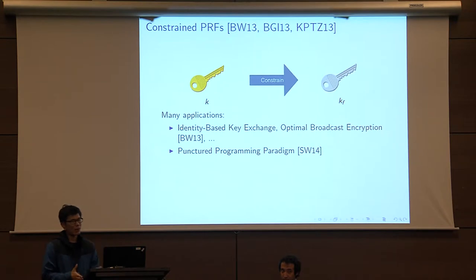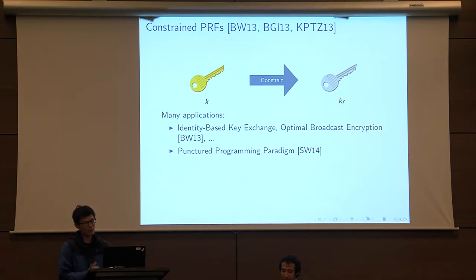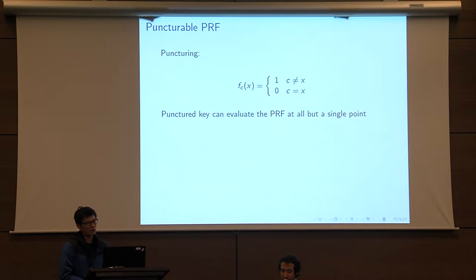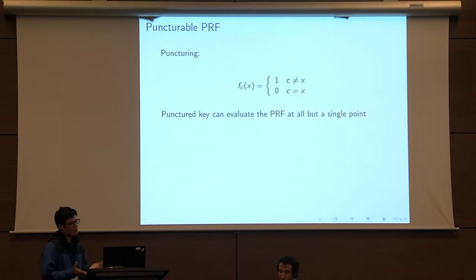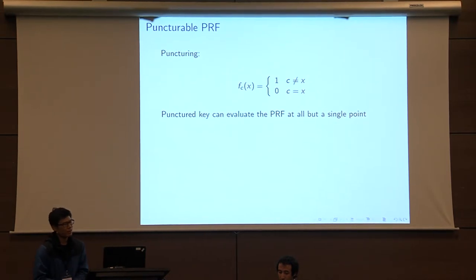For this talk, I'll be focusing on a special family called puncturable PRFs, which have been used widely in the puncture programming paradigm of Sahai-Waters for constructing schemes from indistinguishable obfuscation. Puncturable PRFs are constraint PRFs where the family of constraint functions is restricted to point functions or complements of point functions. The constraint function is defined with respect to a single point c in the domain: it evaluates to one on inputs not equal to c, and zero on inputs equal to c. So with the puncture key, you can evaluate the PRF at all points except the puncture point.